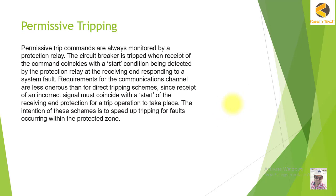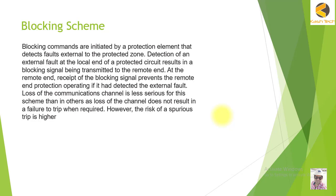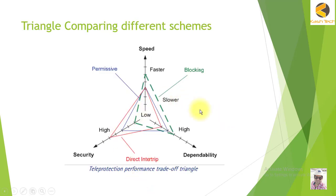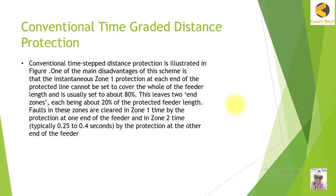With permissive tripping, a trip signal is sent to the other end, but the remote end checks additional conditions before allowing tripping — otherwise it does not trip. We will also study the blocking scheme, and then we will look at the advantages and disadvantages of various teleprotection schemes. Some schemes are faster, some are slower, some require high security, and some have low security.